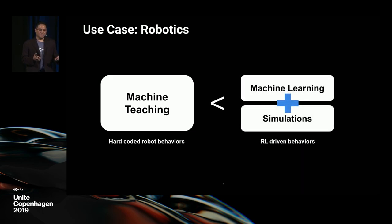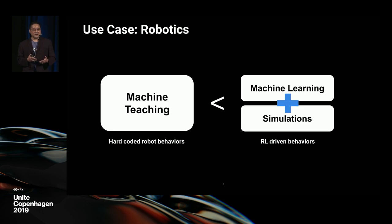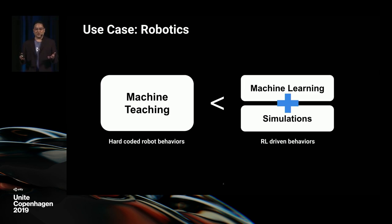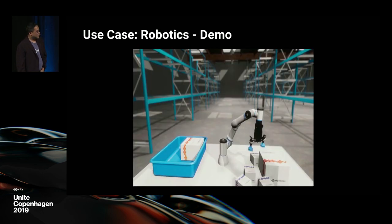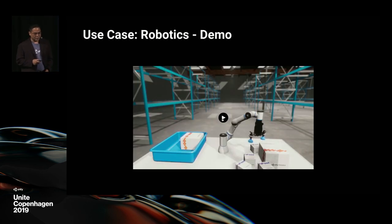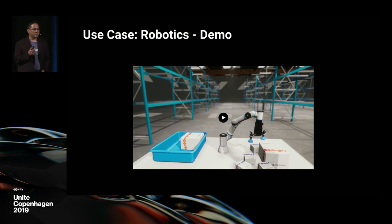What you can do today, using a combination of machine learning and Unity simulations, is train your robots using reinforcement learning to flexibly do more tasks and to anticipate scenarios that you could never program — like someone walking through a factory floor or different packaging environments that could be changing based on seasonal demand. We have a brief demo built by one of our internal groups involving a universal robot with a six-jointed arm. Go ahead and play the video, Vlad.